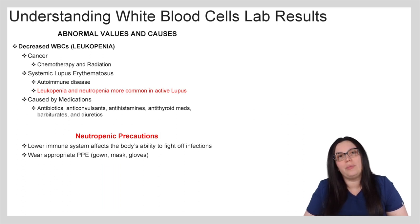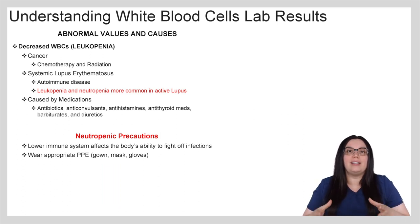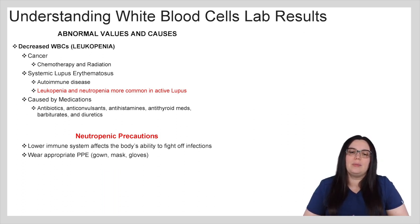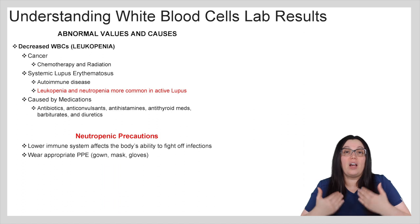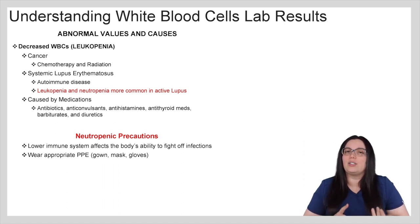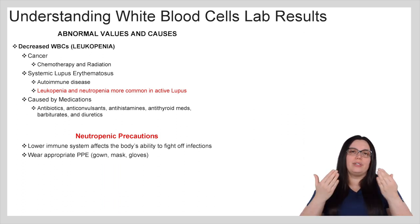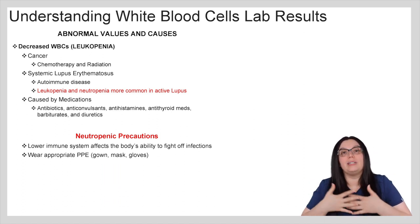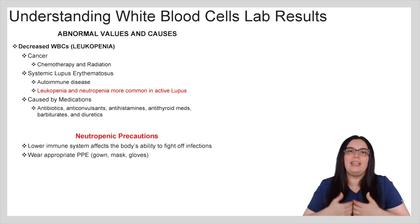If we do have a decrease in white blood cell counts, the primary function of those cells is to support system immunity. If the count is decreased, we no longer have that immune protection, so we usually place these patients on neutropenic precautions because of the lower immune system and the body's inability to fight off infections. That consists of wearing appropriate PPE — gown, mask, gloves, goggles — whatever we can use to protect the patient. Normally we wear PPE to protect ourselves, but in this situation we're wearing PPE to protect them.